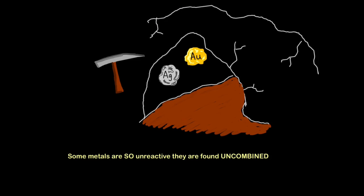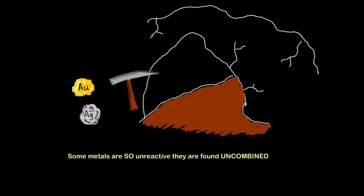Some metals are really easy to extract because they are so unreactive they are found naturally uncombined to any other element. For example, gold and silver are so unreactive that we just need to dislodge them from the mine, as simple as plucking an apple off a tree.